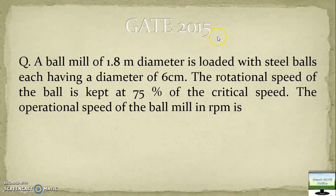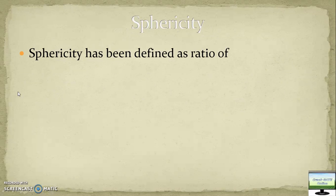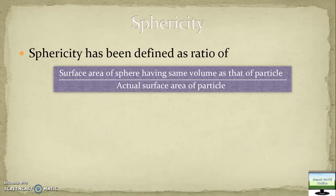This is latest question Gate 2015. Same formula you have to apply - diameter of ball mill and the ball are given, critical speed is given, and the question asks in rpm, so you need to multiply by 60.